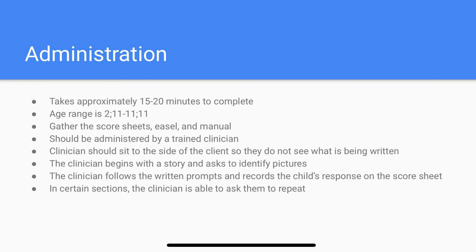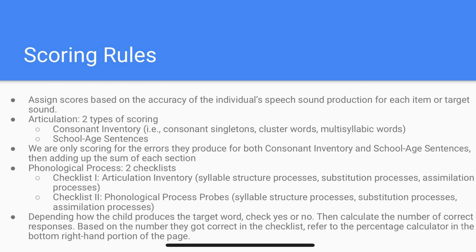Administration takes approximately 15 to 20 minutes to complete. The age range for this test is 2 years and 11 months to 11 years and 11 months. For administration, we gather the score sheets, the easel, and the manual. The test should be administered by a trained clinician who sits to the side of the client so they cannot see what is being written. The clinician begins with a story and asks the child to identify pictures. The clinician follows written prompts and records responses on the score sheet; in certain sections, the clinician may ask the child to repeat what is said.